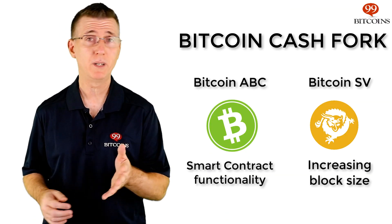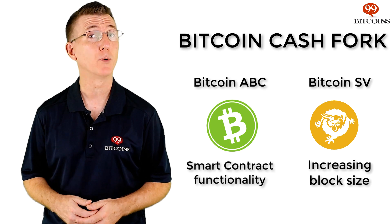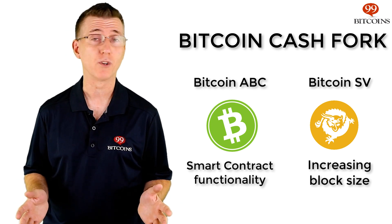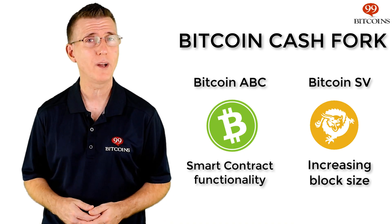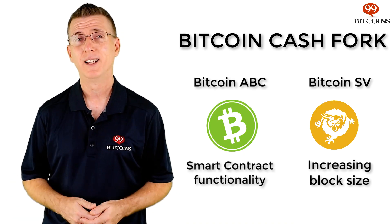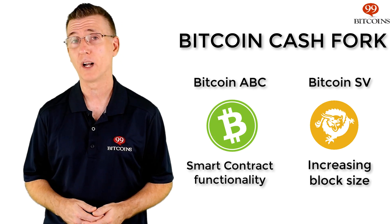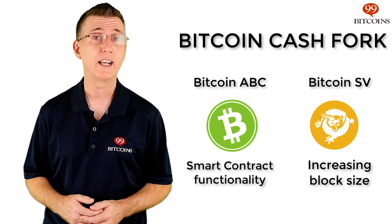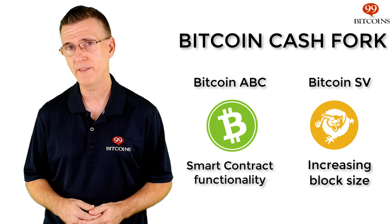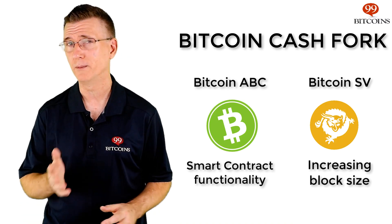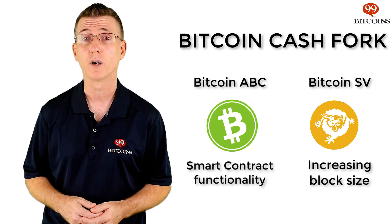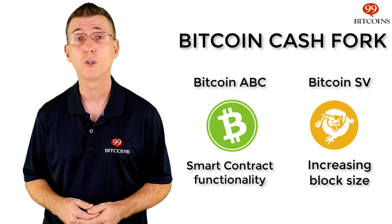In November of 2018, Bitcoin Cash went through its own hard fork. This time, the two camps were the original Bitcoin Cash, also known as ABC, and Bitcoin SV, which stands for Satoshi's Vision. Bitcoin ABC's camp was led by Roger Ver and Bitmain. The Bitcoin SV camp was led by Craig Wright — a person who previously claimed to be Satoshi Nakamoto but never supplied ample proof — and Calvin Ayer, the owner of the largest Bitcoin Cash mining pool, CoinGeek.